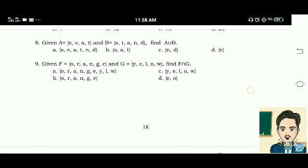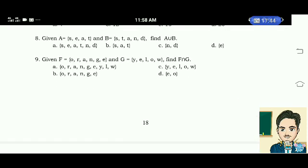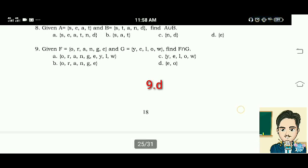Number 9. Given F is equal to the elements O, R, A, and G, E. And G is equal to the elements Y, E, L, O, W. Find F intersection G. The correct answer is letter D. The correct answer is letter D. Elements E and O.